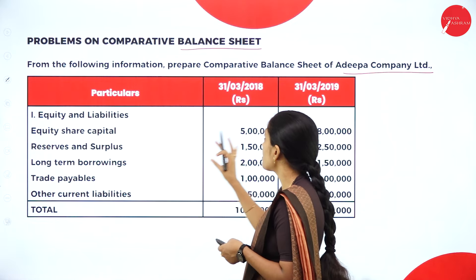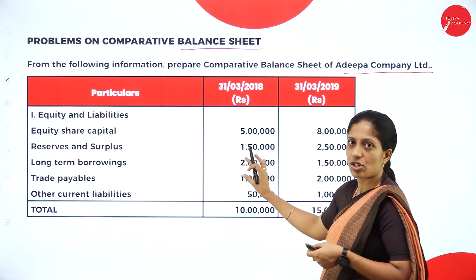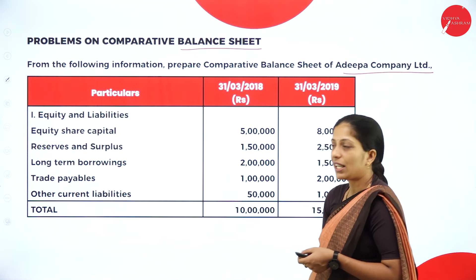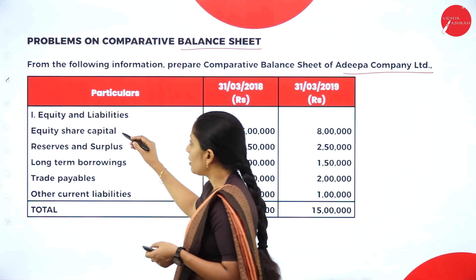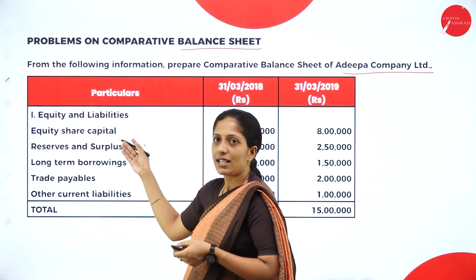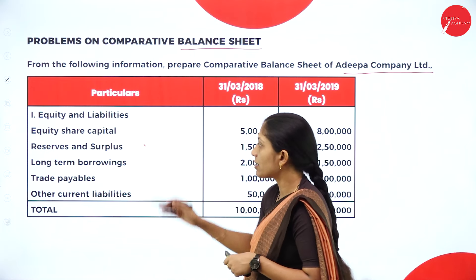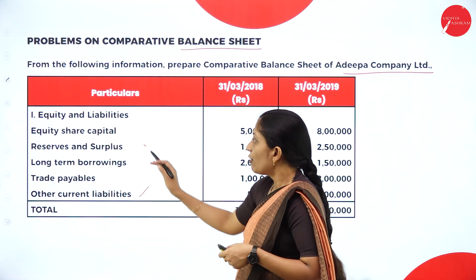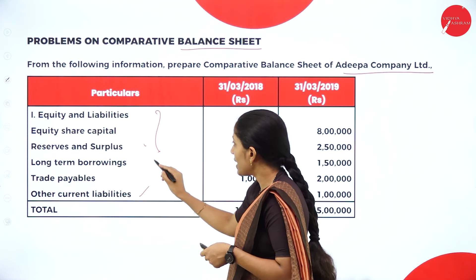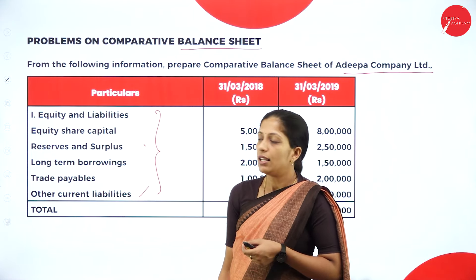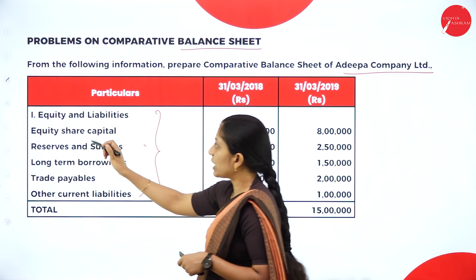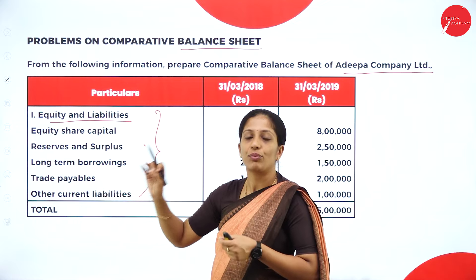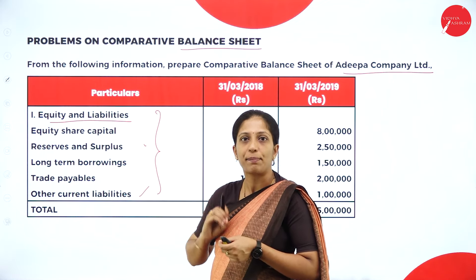They have given particulars and two years of financial data — 2018 and 2019 — where they have given equity and liabilities: equity share capital, reserves and surplus, long-term borrowings, trade payables, and other current liabilities. For this, we have to prepare the necessary headings. Now they have randomly given all the equity and liabilities, so first you have to arrange them in the order with the respective headings as well as subheadings.